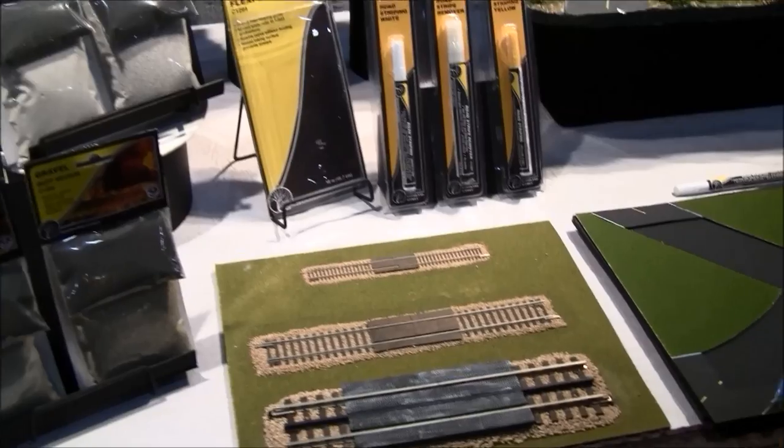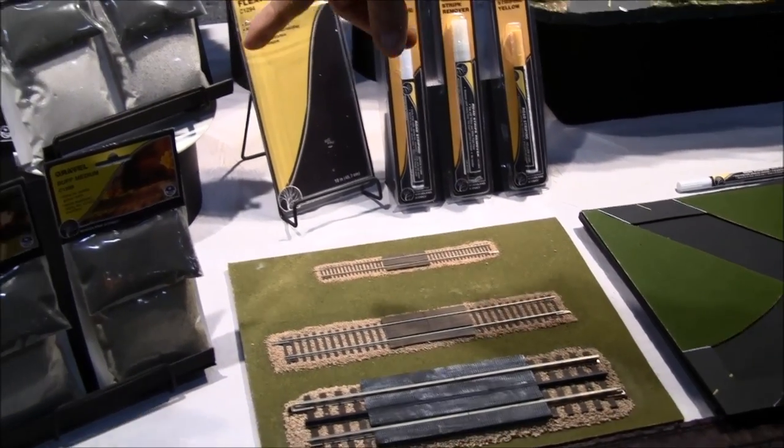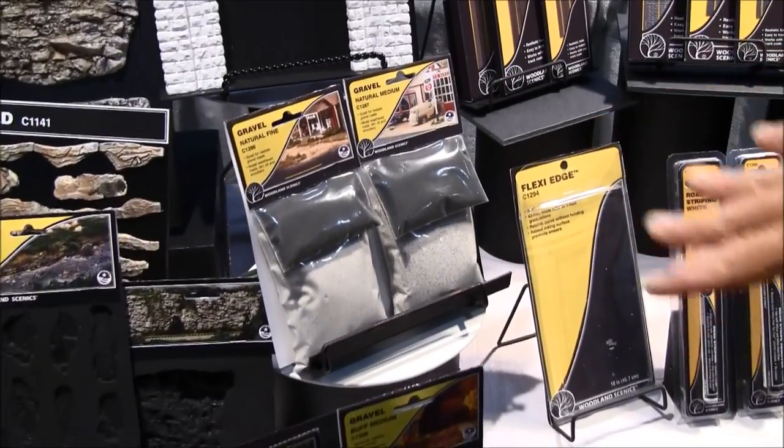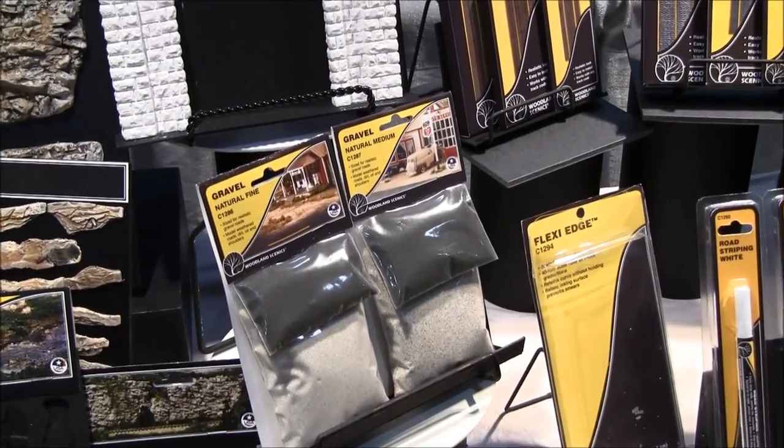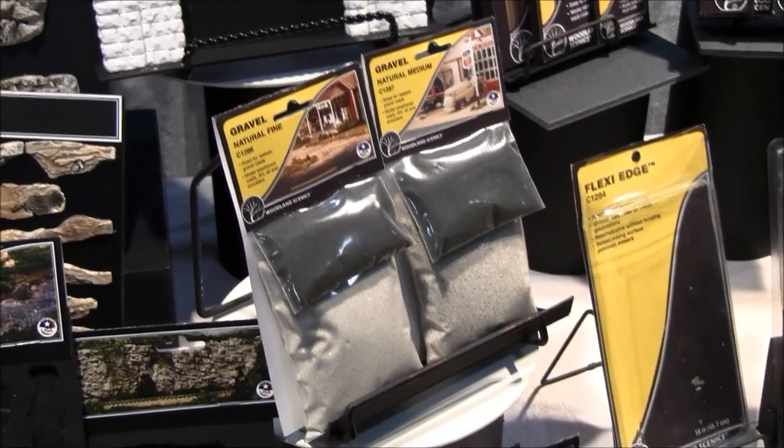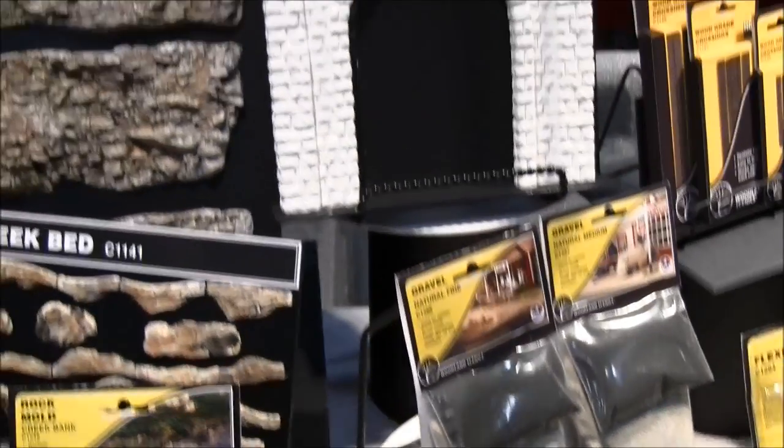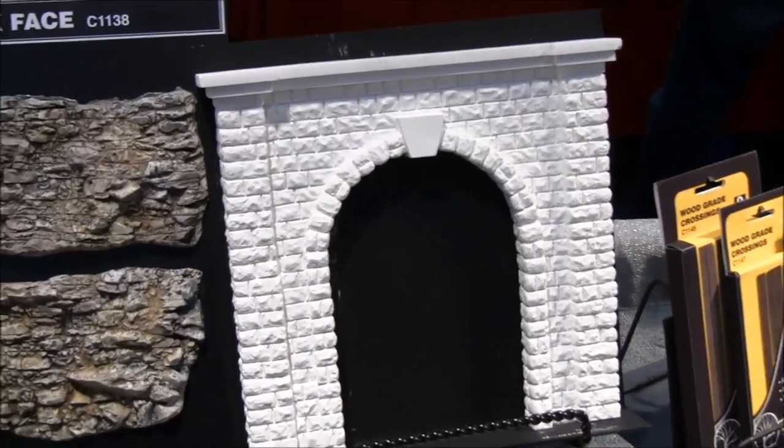Here's an example of them installed. We also have some new gravel and this gravel is especially sized to be able to make gravel roads in N and HO scale so they actually look to scale as opposed to being a little bit larger. We've got new O scale portals which the O scalers are really thrilled about.